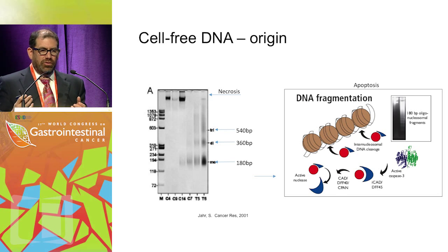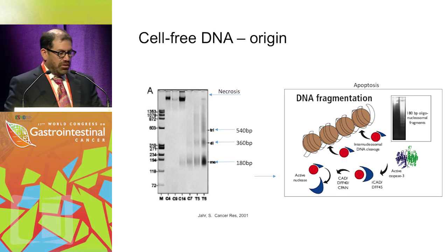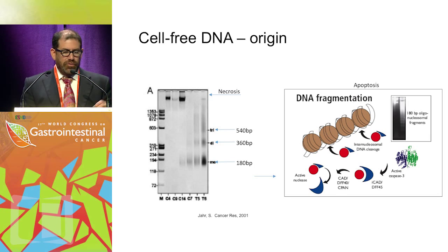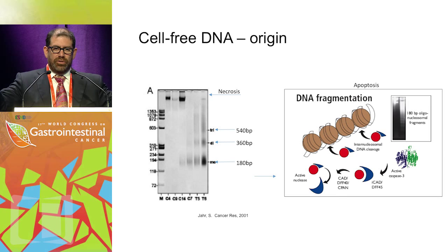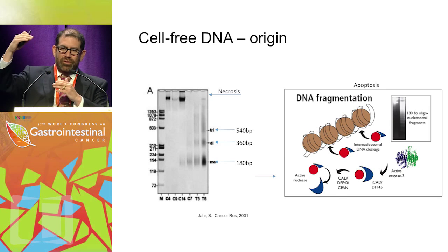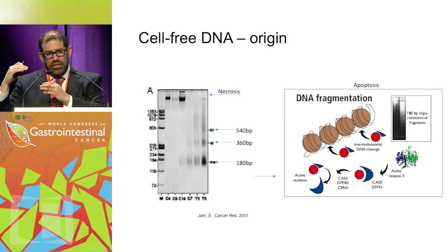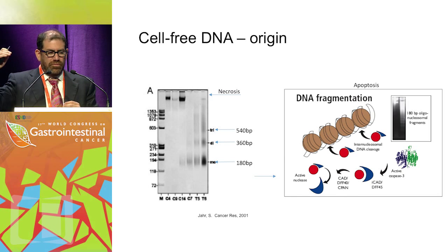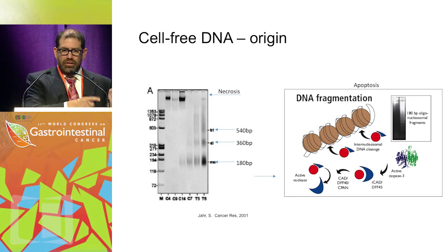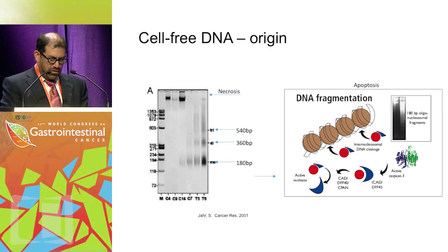If you look at this DNA under size exclusion methodologies like gel electrophoresis, you can see that necrosis produces large, unorganized fragments in the circulation. With apoptosis, cell death is very organized and produces very predictable DNA fragment sizes — the majority are about 180 base pairs. So depending on whether cells die by necrosis or apoptosis, you see large differences in the size of the circulating DNA.